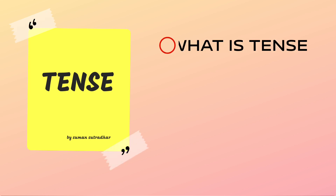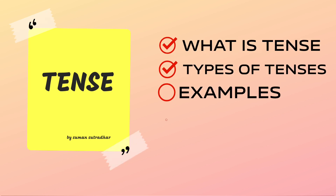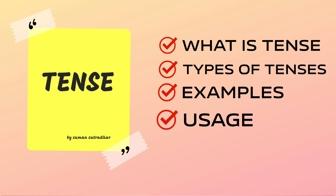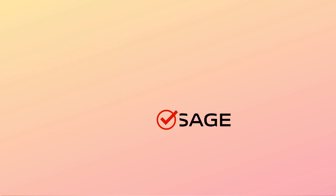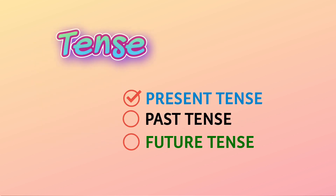What is tense? How many tenses are there? How to use them? Everything we will discuss in this video. Basically, tense denotes or shows the timing of an action. There are three types of tense: present, past, and future. All these tenses can be further divided into four parts.